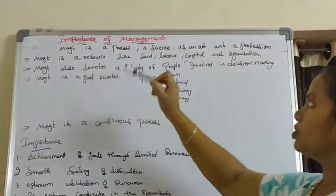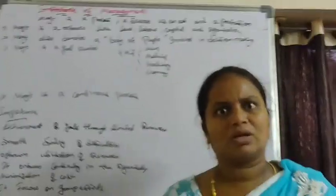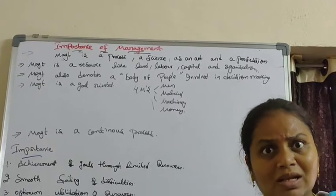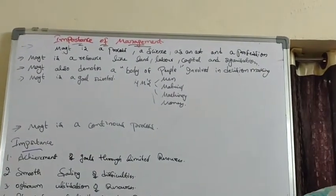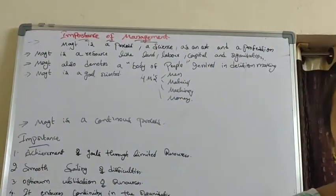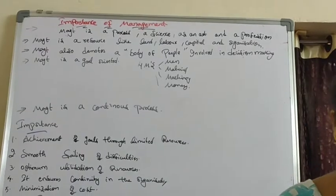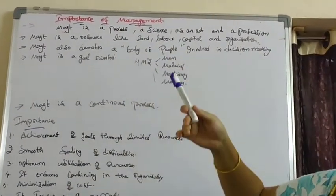Management is a resource like land, labor, capital, and organization. In the olden days, we used the land resources in an effective manner around our home. There were not that many expenses. Now, each and everything we have to purchase in the market.